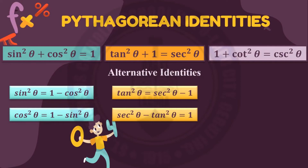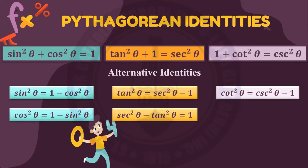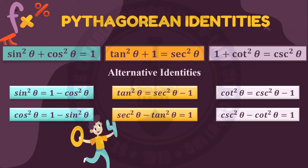Lastly, we have another pair: cotangent squared theta equals cosecant squared theta minus one, and cosecant squared theta minus cotangent squared theta equals one. This last pair of alternative identities corresponds to one plus cotangent squared theta equals cosecant squared theta.